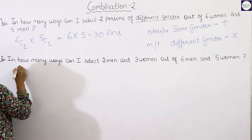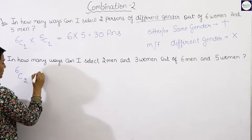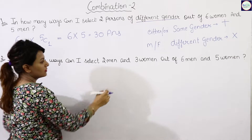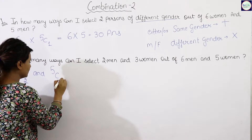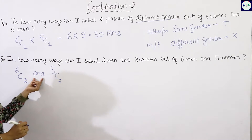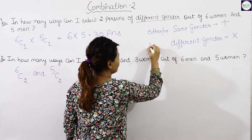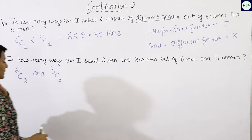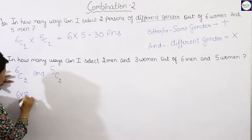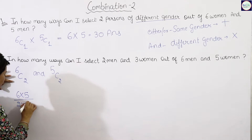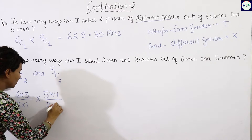We select two out of six men, which gives us 6C2, and three out of five women, which gives us 5C3. Since it is an 'and' condition, we multiply. So it is six into five over two into one, multiplied by five into four over two into one.